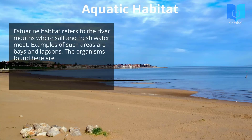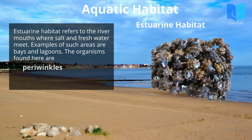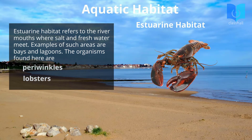Estuarine habitat refers to river mouths where salt and fresh water meet. Examples of such areas are bays and lagoons. The organisms found here include periwinkles and lobsters.